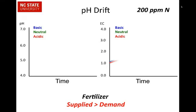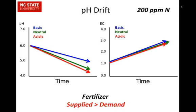Now let's shift to doubling the fertilizer to 200 parts per million, where supply is actually greater than demand — you have too much fertilizer present. What happens to EC? In all three cases — basic, neutral, and acidic — you'll see EC increase over time, telling you that you're supplying more than the plant needs. The interesting finding in this research is that with all three fertilizer types — basic (blue line), neutral, and acidic — the pH still dropped over time. You would expect a basic fertilizer to cause pH to rise, but they did not find that across their numerous trials.